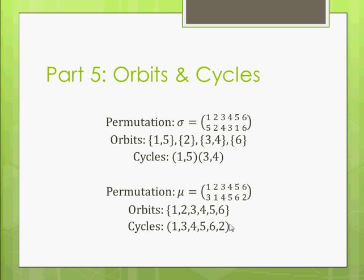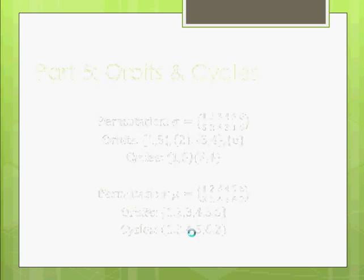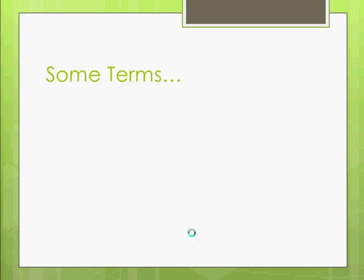And that's easy to show because the cycle, in this case, is the whole set in the permutation. So, in this case, the permutation would be a cycle because we can write the permutation as one cycle. So, I'm going to say that over and over again. So, if it's fuzzy now, don't worry because I'll get it through to you.